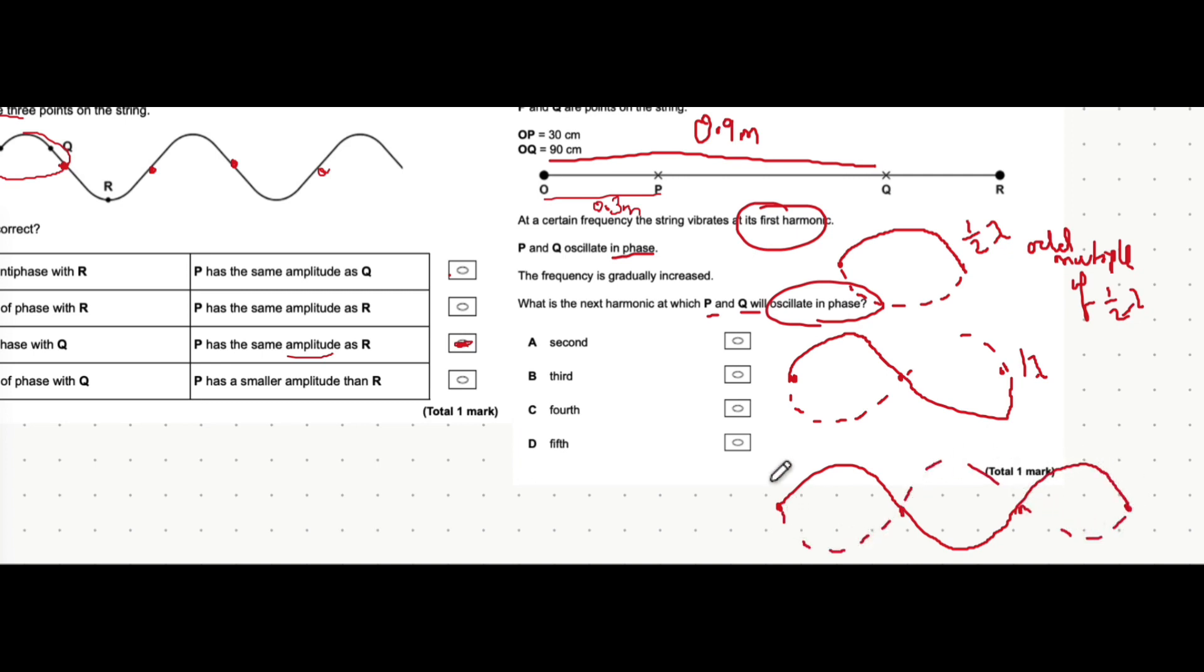What we'll see is that the length here represents not only one, but an extra half of a wavelength. So 1.5 wavelengths. That's an odd multiple of a half wavelength because that's three over two wavelengths. That's when they're in phase again. So that's the third harmonic.